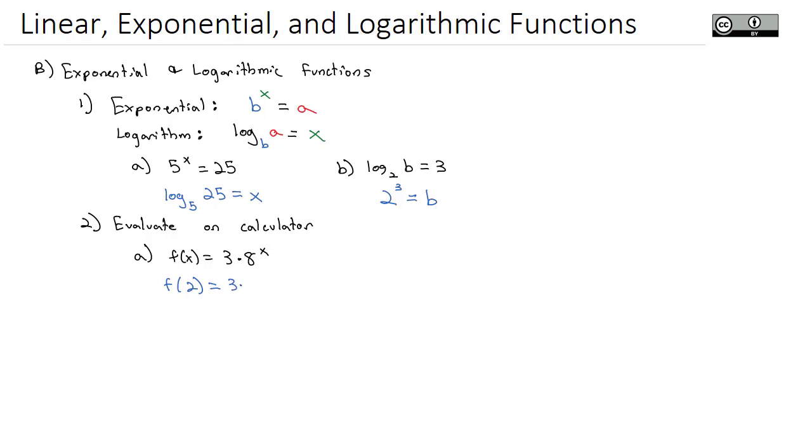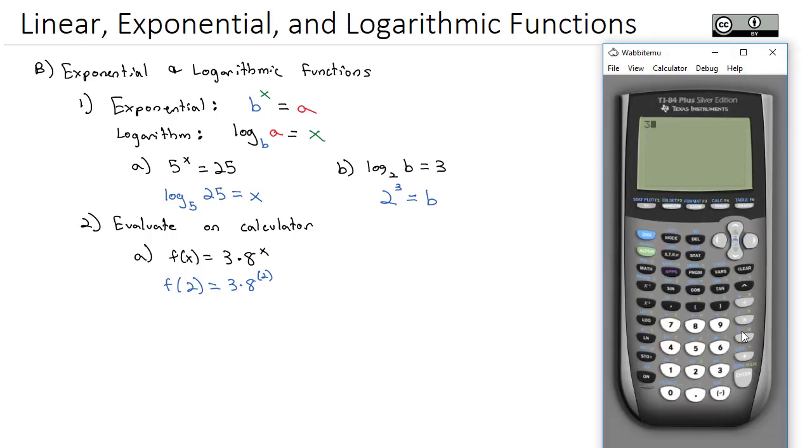We know that means we're going to take 3 times 8 and replace the x with the 2. On the calculator, I can type 3 times 8, and then to get the exponent, we'll use the exponent key, and then do the number 2 to find out our answer is 192.